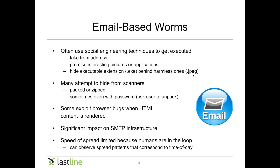For email-based worms, the speed of spread is limited because humans are actually in the loop. If you have the choice between an exploit-based worm or an email-based worm, your choice would be to pick an exploit-based worm because you don't need any human interaction. If you find a vulnerability you can exploit, you can automate the whole thing and the worm spreads by itself. Today that's more difficult because we have quite a number of defense mechanisms in place, especially on desktop operating systems, that make remote exploitation more difficult. That's why today we're mainly seeing email-based worms.